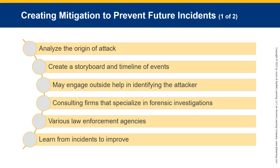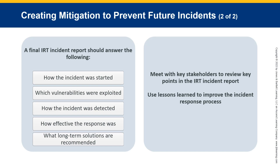Creating mitigation to prevent future incidents involves analyzing the origin of the attack and creating a storybook and timeline of events. Outside help, such as consulting firms specializing in forensic investigations or law enforcement agencies, may be engaged with upper management approval. A final IRT incident report should answer how the incident started, which vulnerabilities were exploited, how it was detected, how effective the response was, and what long-term solutions are recommended. Meet with key stakeholders to review the report and use lessons learned to improve the incident response process.